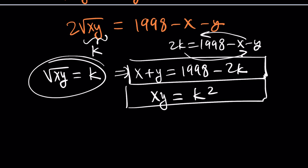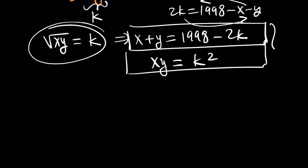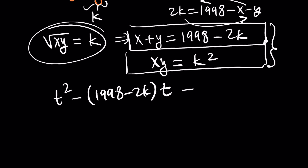Now we can set up a quadratic equation, because we know the sum of the roots and the product. By using Vieta's formulas, and using variable t so we're not confused, it's going to look like: t² minus (1998 minus 2k) times t plus k² equals 0. In this equation, k is a constant.